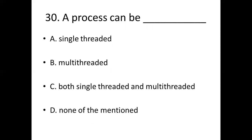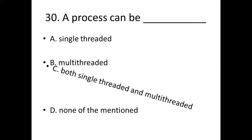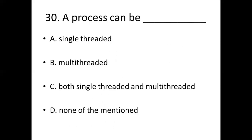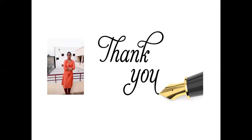Question 30: A process can be dash. Option A: single threaded. Option B: multi-threaded. Option C: both single threaded and multi-threaded. Option D: none of the mentioned. Answer: Option C, both single threaded and multi-threaded.